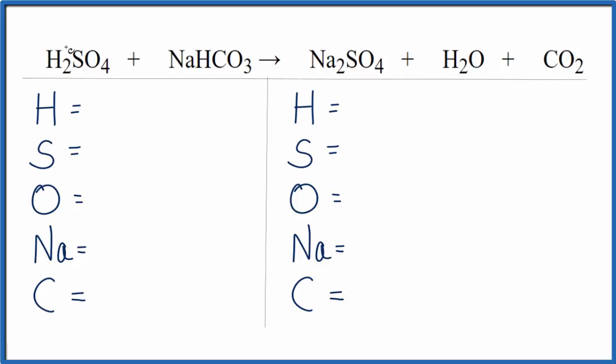On the reactant side, we have two hydrogens here, plus we have one here, so we have a total of three hydrogens. Sulfurs, we just have the one. Oxygens, we have four, plus we have these three right here, so we have a total of seven oxygens.